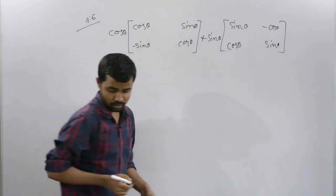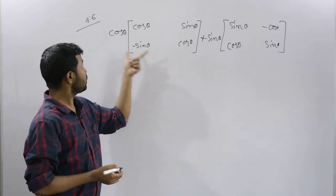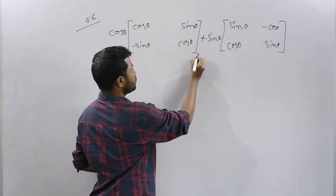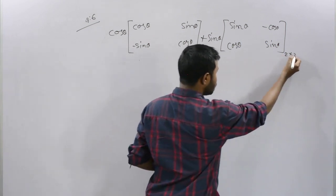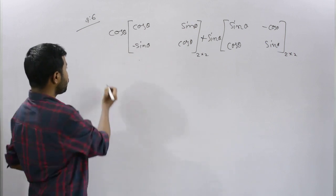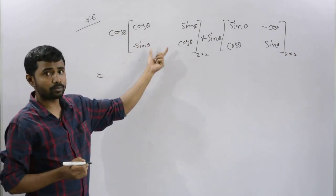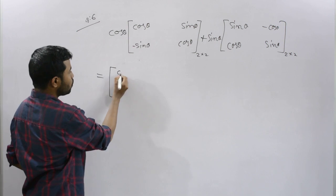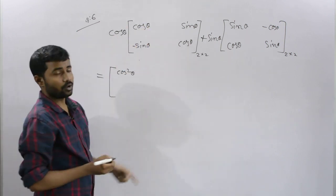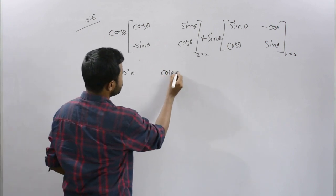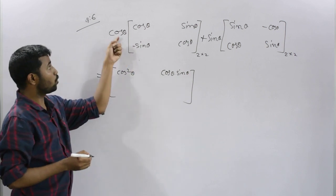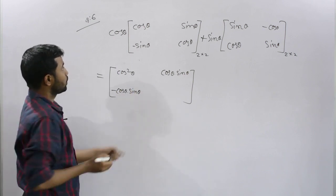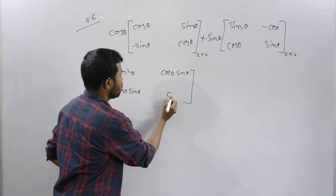This is a 2 into 2 order matrix. Now the order is 2 into 1. If I multiply cos theta to the A matrix, multiply cos theta into sin theta, the next element is cos theta minus sin theta, that means minus cos theta into sin theta. Then cos theta gives cos square theta.